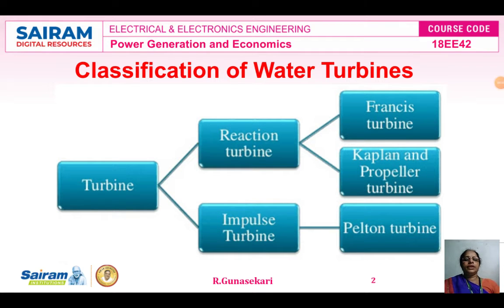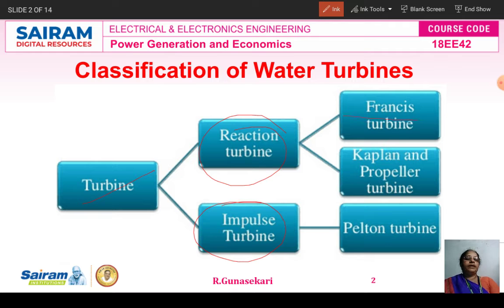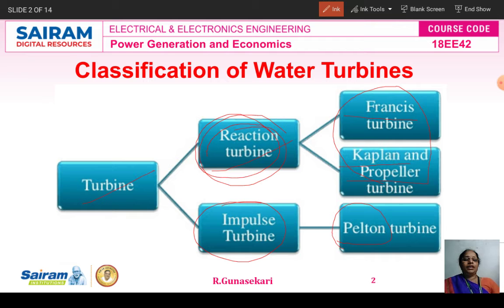Students, now you see the block diagram. Water turbines are classified into two types: one is reaction turbine, another one is impulse turbine. Under reaction turbine, there are three types: Francis turbine, Kaplan turbine, and propeller turbine. The Pelton wheel turbine, also called the Belt and Wheel turbine, is classified as an impulse turbine. This is the classification of water turbines.